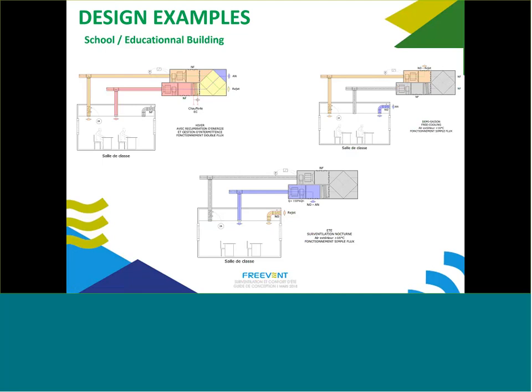Three degrees is a good threshold to start ventilative cooling. School and educational buildings are really good for ventilative cooling because the ventilation flow rate needed during the day for occupancy is already quite high — these are rooms with a lot of occupancy. So at night, sometimes you don't need to add much to have the airflow needed for ventilative cooling. Sometimes you just have to run the fan at night and it's done. A good rule is to try to have only one fan working instead of the balanced fan, dividing the electrical consumption by two.